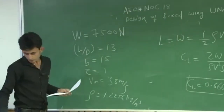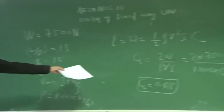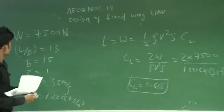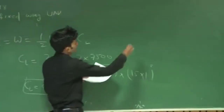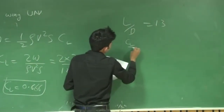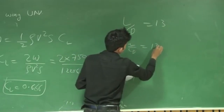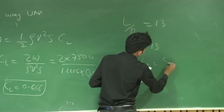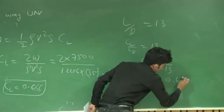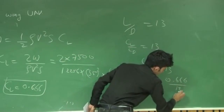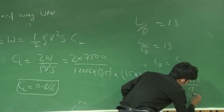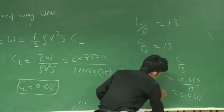In the second question, you have to find the value of CD. CL is found to be 0.666 and the lift-to-drag ratio is given as 13, which is nothing but CL by CD = 13. So CD will be CL divided by 13 — that is 0.666 divided by 13 — so CD comes out to 0.0512.